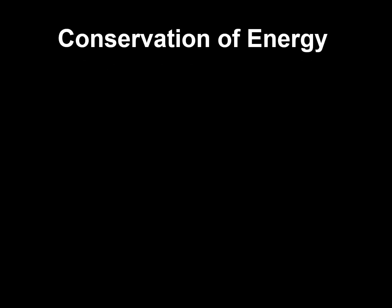The law of conservation of energy — let's start getting into the math. The main idea is that the total energy I start with, plus any work done by outside forces (positive for an applied force, negative for friction or dissipated energy), will equal my final energy. If I have a closed system where no work is done on or by the system, the total energy I start with equals the total energy I end with.